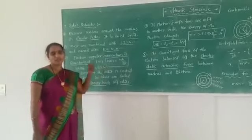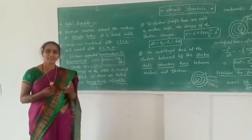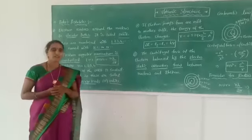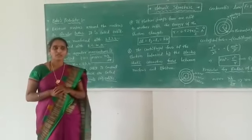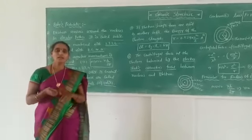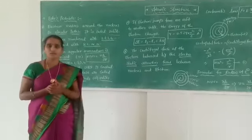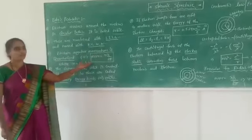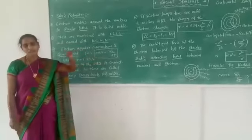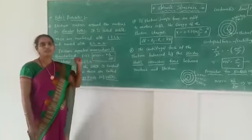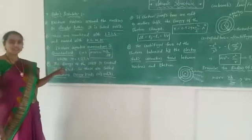For understanding quantization, here is an example. If you want to climb a tree or a building, we need a ladder. This ladder is associated with some graded horizontal rungs. If we put our foot on a horizontal rung only, climbing is possible. If we put our foot in between two horizontal rungs, we will definitely fall down. Like that, electrons also revolve around the nucleus only where the n values are 1, 2, 3, 4. In between the n values, they will fall down. That is why n should be 1, 2, 3, 4.